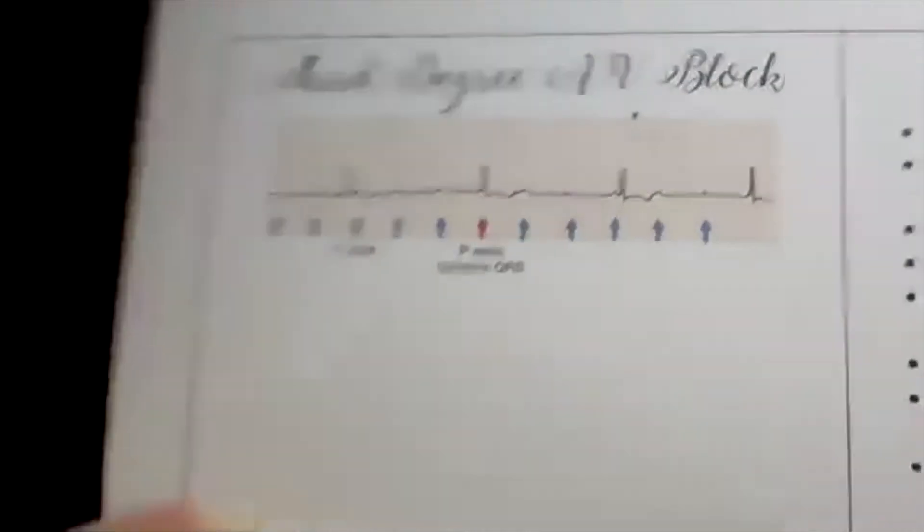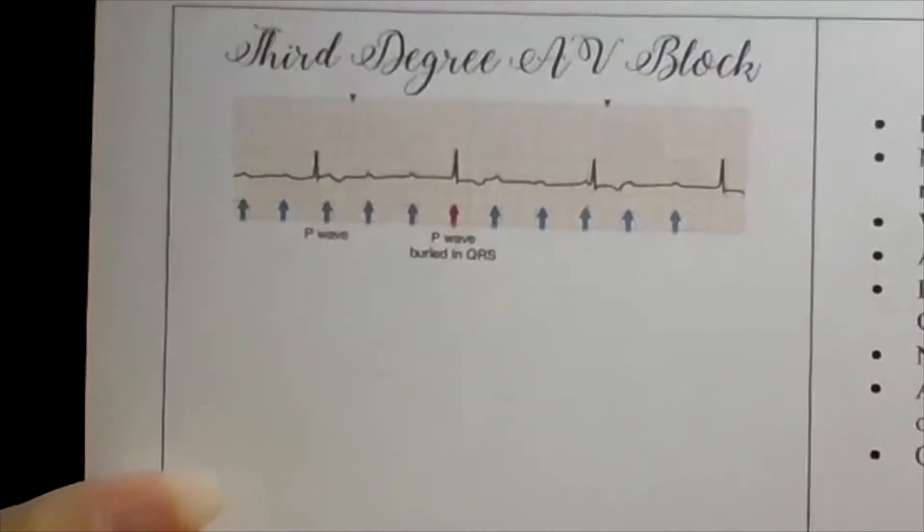In third-degree block, the P waves are all equally spaced and the QRS complexes are equally spaced, but they have no relationship with each other — they're completely off beat from one another. An EKG example shows multiple P waves with random-appearing QRS complexes that don't consistently line up.